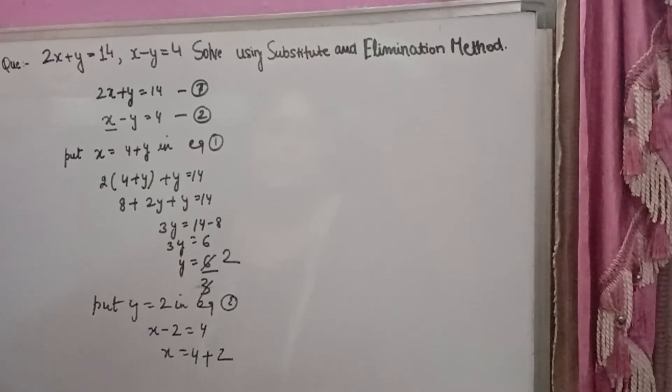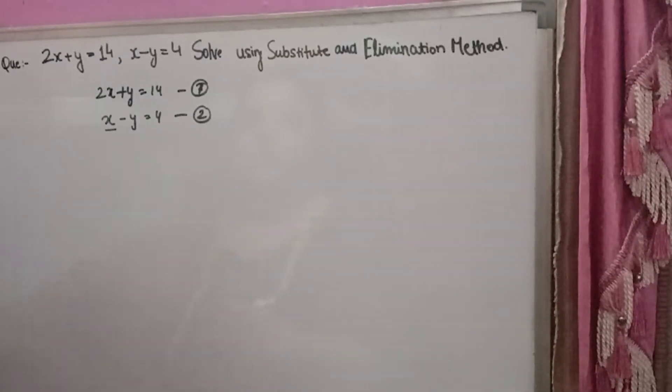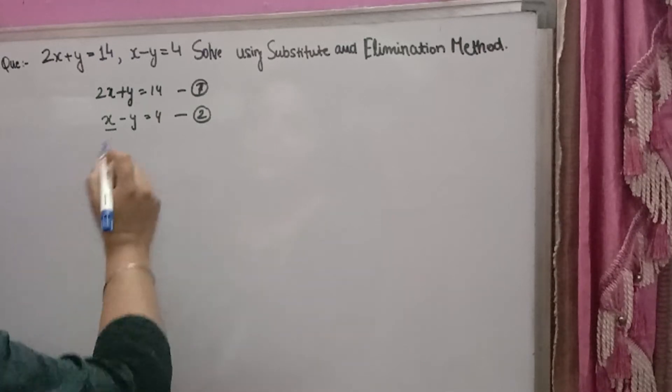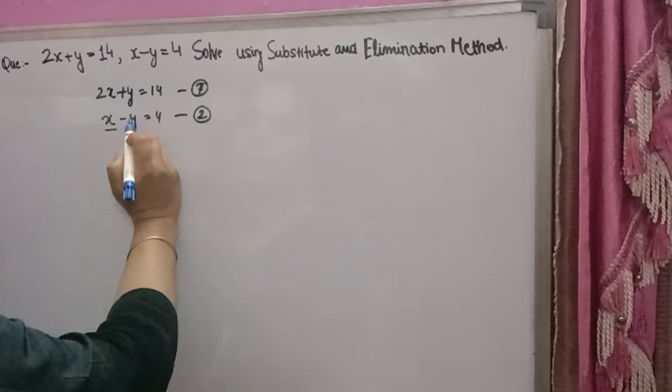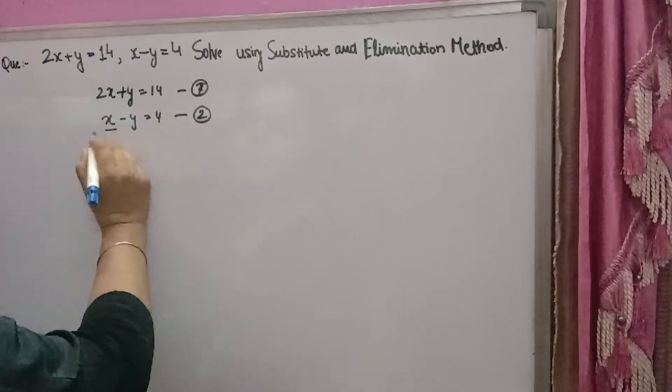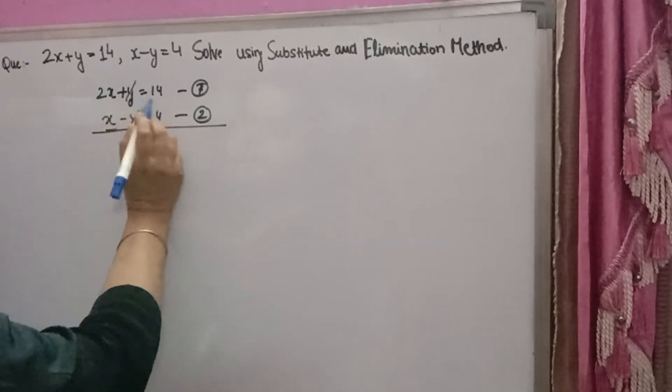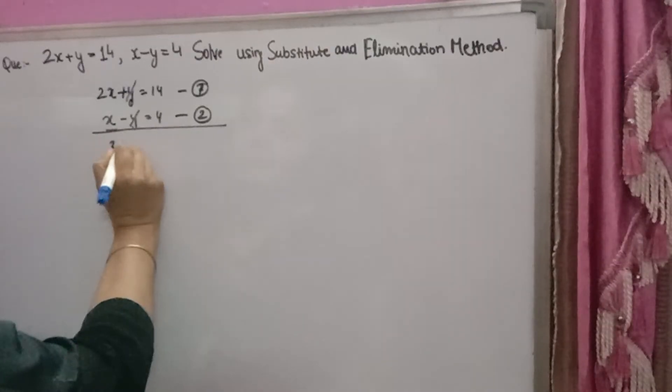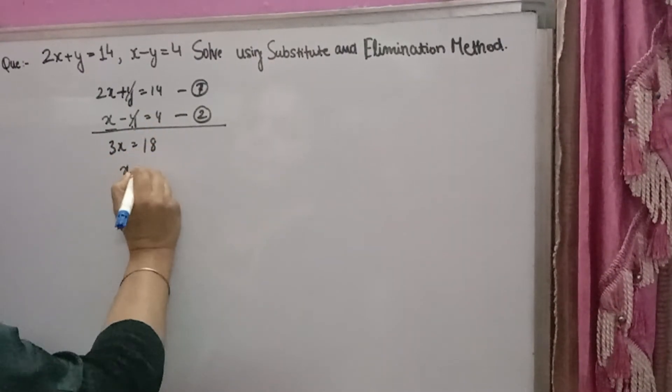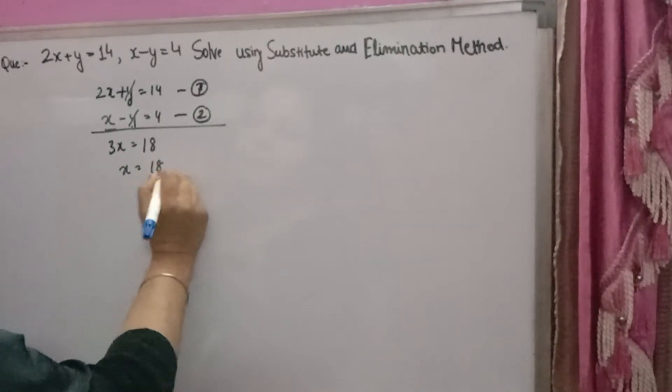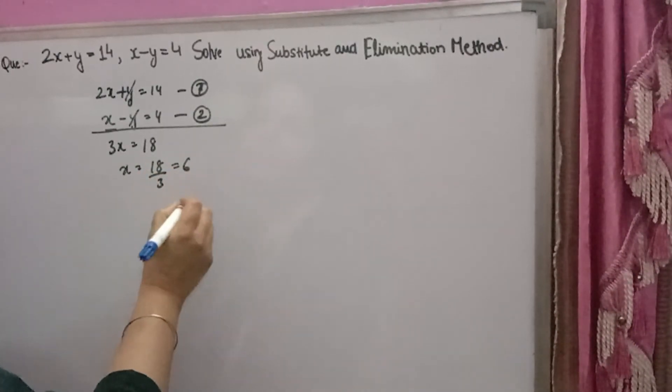Now I will solve using elimination method. Plus y minus y, both are the same. The coefficient of y is the same with opposite sign, so you will add both equations. Here y minus y cancels. 2x plus x is 3x, equals 14 plus 4, which is 18. X will come 18 over 3, that is 6. X value came 6.